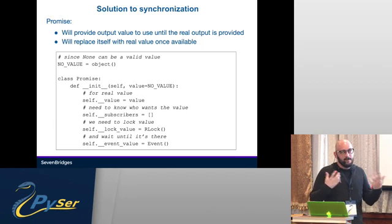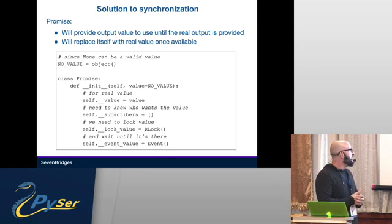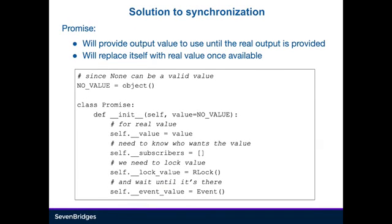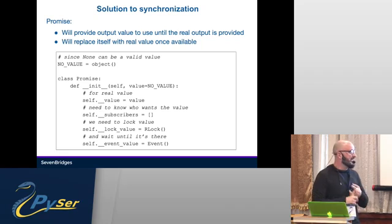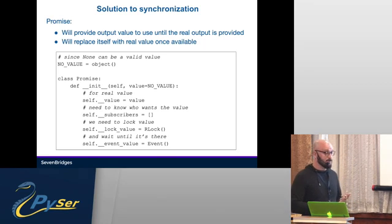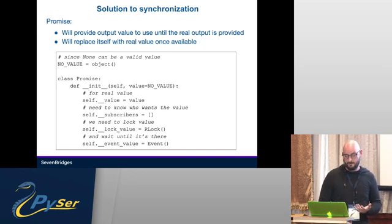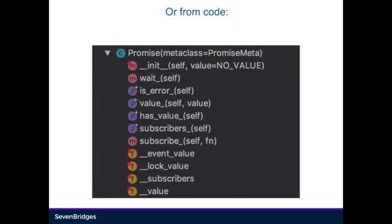This is how the Promise looks in its basic form: we had to define something as 'no value' or null to replace None, because None is a viable value in some cases. So it had a value field which really holds the value, it had subscribers because it had to know to inform others when the real value becomes available, it had locks, and it had events to enable synchronization between threads. In code it has a couple more attributes added, but mostly everything else is just decoration on it.